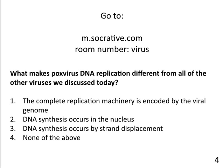Quiz: what makes poxvirus DNA replication different from all other viruses discussed today? The answer is that the complete DNA replication machinery is encoded by the viral genome — 'complete' is the key, because the others only encoded part of it. DNA synthesis does not occur in the nucleus for poxvirus — it occurs in the cytoplasm. Strand displacement also occurs in poxvirus but that doesn't make it unique. What is unique is that pox encodes everything it needs, whereas adeno and herpes make a lot but still need something from the cell.